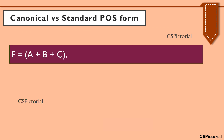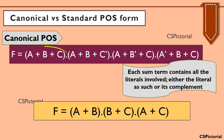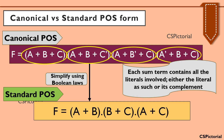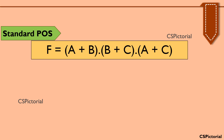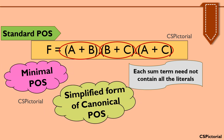Here are two product of sums expressions. The first expression is a canonical form of POS because in this expression each sum term contains all three variables a, b, and c involved in the expression, either the literal as such or its complement. When this expression is simplified using some Boolean laws, we get the standard POS expression. This POS expression is said to be a standard POS expression because here each sum term does not include all the literals. The first sum term a plus b is missing c, the second term b plus c is missing a, and the third sum term a plus c is missing b. Thereby, a standard POS expression can also be called a minimal POS or simplified form of canonical POS.